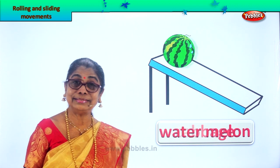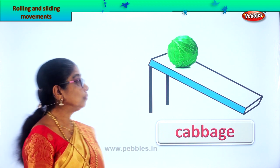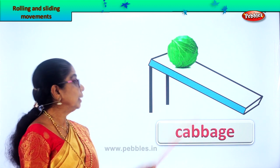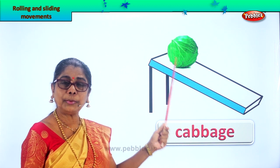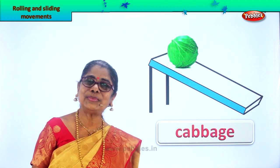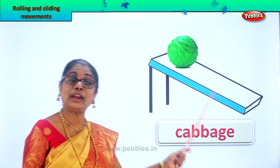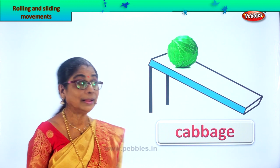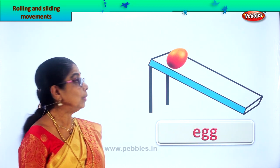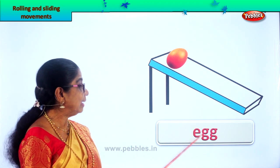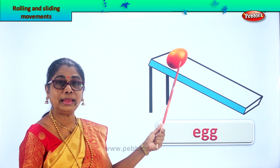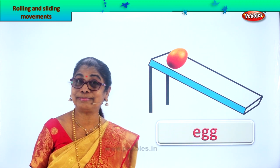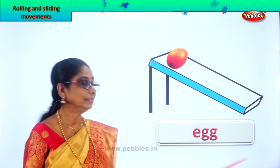Good. Let's look at another. What else can roll, children? Look — a lovely fresh green cabbage. Cabbage too. You keep it on the top there, it can roll down. So we saw some examples of things that can roll down. Next, what is this? An egg. You keep an egg over there and it will come crashing down. It might break too. An egg can roll down.